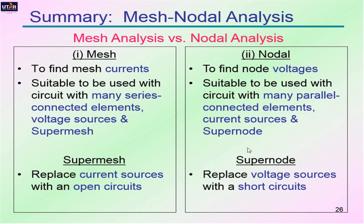Here is a summary of mesh analysis and nodal analysis. Mesh analysis finds mesh currents and is suitable for circuits with many series-connected elements, voltage sources, and super mesh — where super mesh replaces current sources with an open circuit. Nodal analysis finds node voltages and is suitable for circuits with many parallel-connected elements, current sources, and super node — where super node replaces voltage sources with a short circuit.